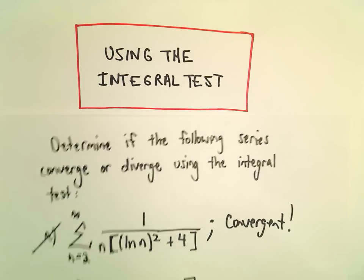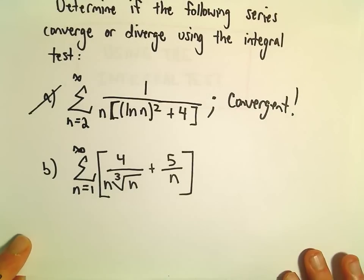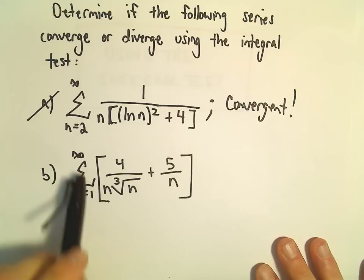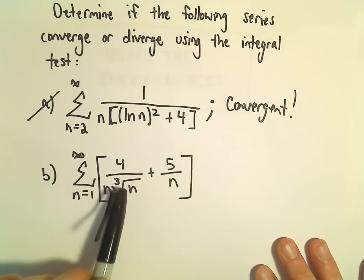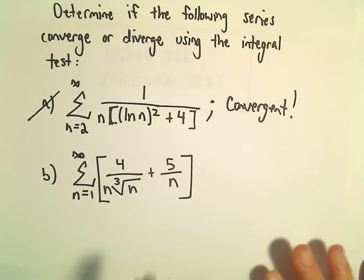Alright, so one more example here using the integral test. We'll determine if this series from 1 to infinity of 4 over n times the cube root of n plus 5 over n, whether or not that series is convergent or divergent.